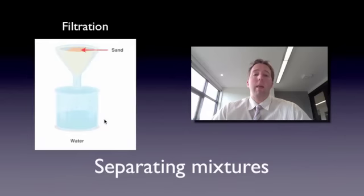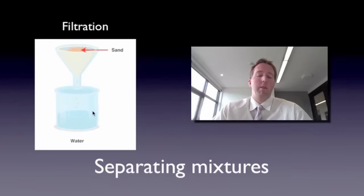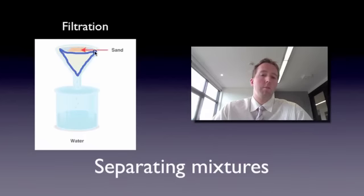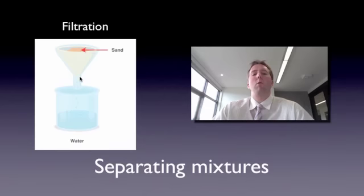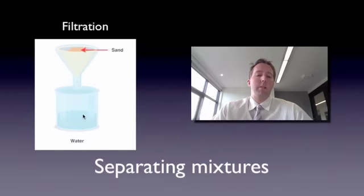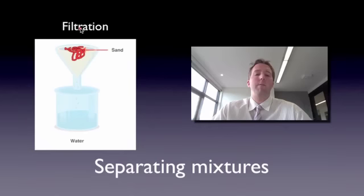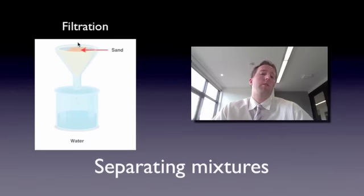Another way of separating materials is via something called filtration. If we have a mixture of sand and water, I would get a little bit of filter paper — this triangular cone here — and pour my mixture of sand and water into it. The water particles are a lot smaller than sand, so the water actually drips down and collects at the bottom. But the sand, because it doesn't fit through the filter paper, stays at the top. So after filtering, the thing that doesn't go through stays at the top, and the thing that does go through collects at the bottom. That's filtration.